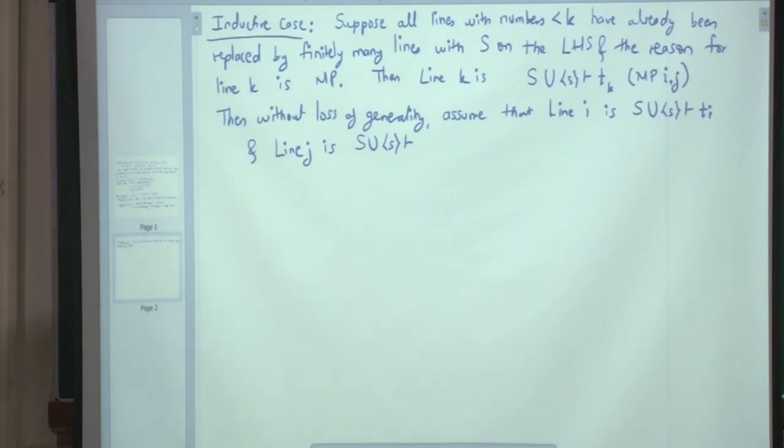One of them has to be something implies T_K. Either T_J implies T_K, or T_I implies T_K. So, here we are going to say, T_I implies T_K.